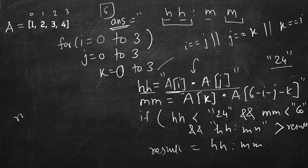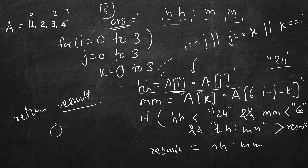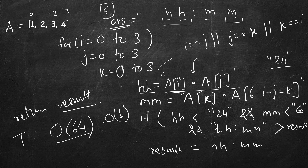Finally we return the result. The time complexity is O(4 × 4 × 4) = O(64), which is effectively constant time. Space complexity is also constant — we have a few string variables of at most 2 characters each (HH, MM) plus the result, so 4–5 characters total.